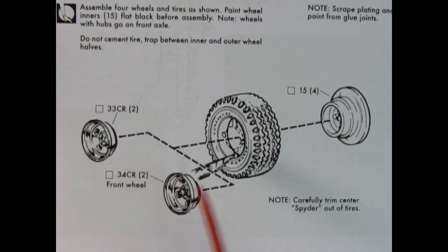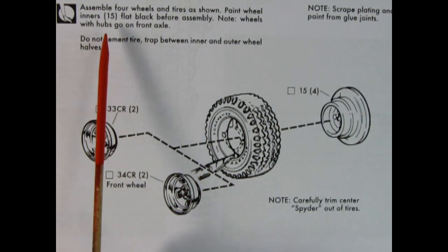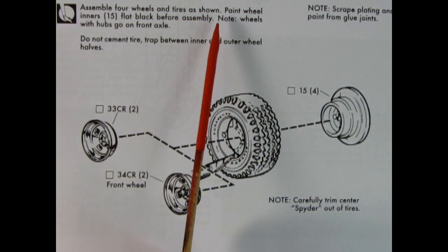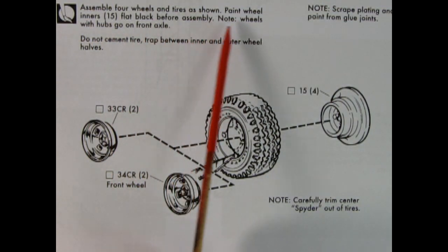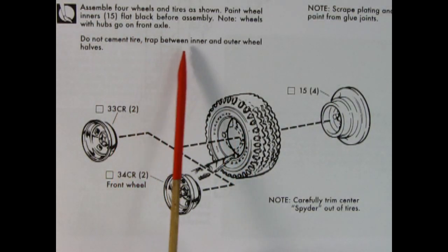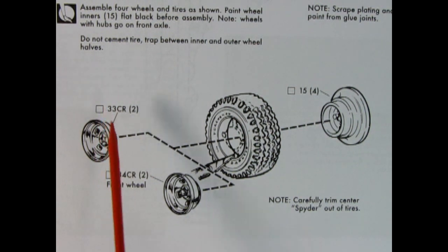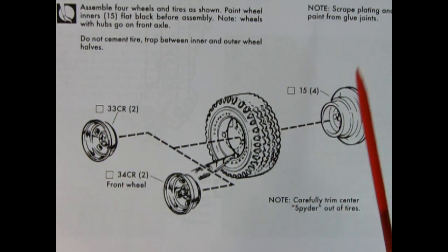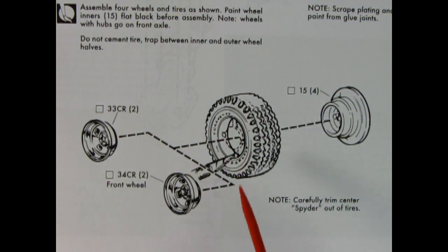Step two shows our wheels and tires being assembled, and it says, assemble four wheels and tires as shown. Paint wheel inners flat black before assembly. Note, wheels with hubs go on front axle. Do not cement tire. Trap between inner and outer wheel halves. And scrape plating. So here we go. But we also have to cut out the spider from the center of the tires. So here we have our wheels. These are the front ones down here, and these are the back. And you can see the hub right there, so those will go in the front. These pop into the tire, and then the back goes into the tire from behind.